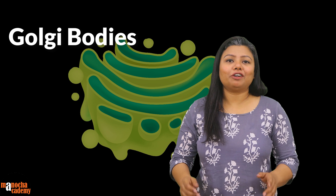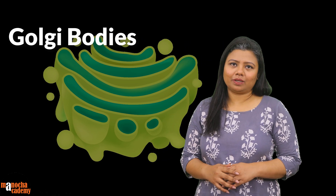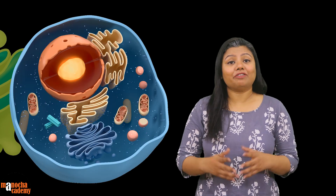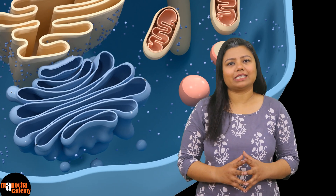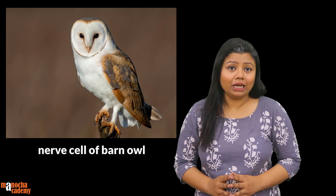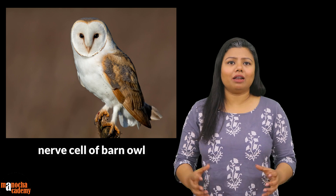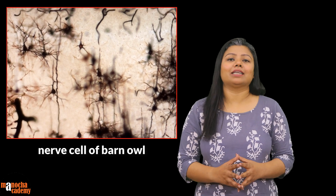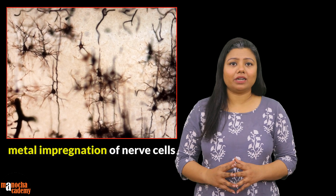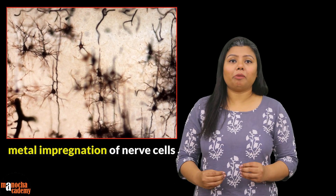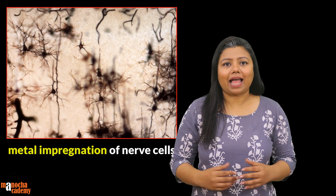Golgi bodies were first observed in 1867 by George. But it was in 1898 that Camillo Golgi actually discovered them and described them as reticular structures inside the cell, which means that these are networks present inside the cell. He was working on nerve cells of barn owl and was using metals to color the membranes inside the nerve cells. With that technique, called the metal impregnation method, he colored the Golgi bodies and described them as reticular structures.